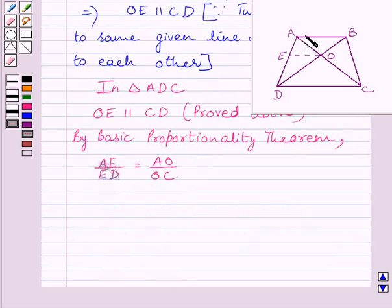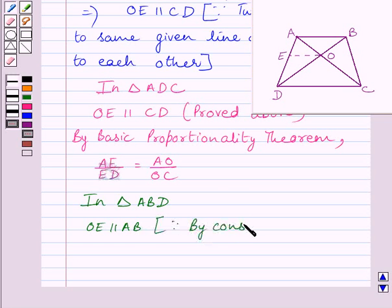Now, let us consider triangle ABD. In triangle ABD, OE is parallel to AB. By basic proportionality theorem we get DE upon EA is equal to DO upon OB.